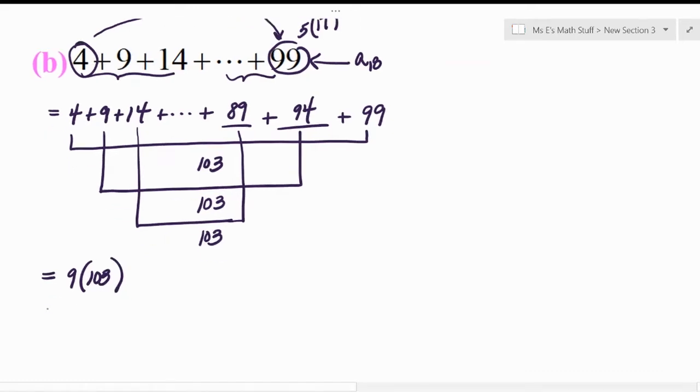There we go. So what would that be? That would be 900 plus 27. So 927. There we go. And if everything I just said made sense, then that's amazing. So congratulations on understanding what I'm trying to say.